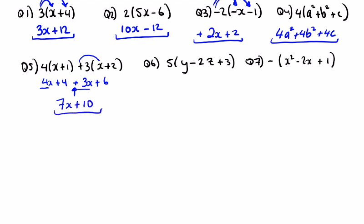This one: 5 by y, 5 by minus 2z, and 5 by 3 gives 5y minus 10z plus 15. Then this one — this comes up a lot in maths — where we have a minus sign in front of a bracket with no number. Just like previously with the power we don't see being 1, the number in front of the bracket that we don't see is also 1. So this means minus 1 multiplied by the bracket.